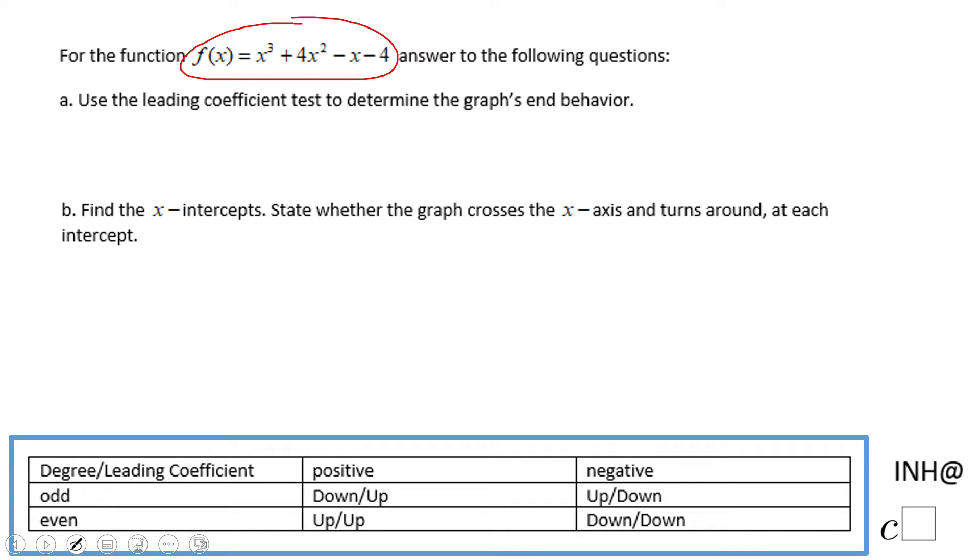The first question is: use the leading coefficient test to determine the graph end behavior. This is the leading coefficient test you see down here. We need to see the degree of this polynomial, that is 3, and the leading coefficient, that is 1.